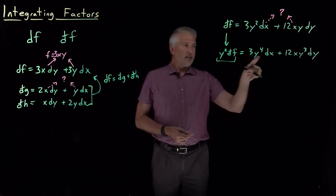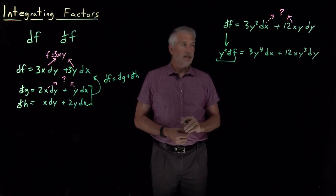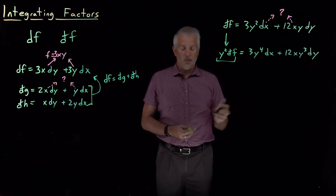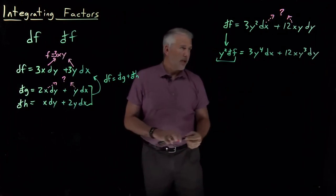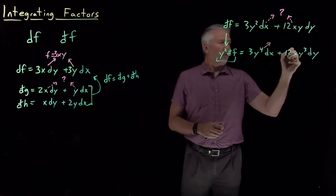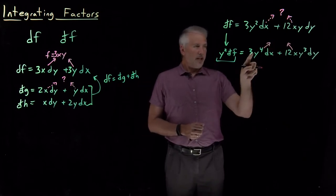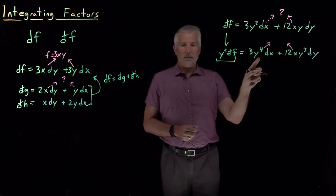That quantity itself, this whole thing y squared times df, we can ask is that an exact or an inexact differential? It has the form of the differential, some quantity multiplied by dx, another quantity multiplied by dy. And in fact, this one's okay. If we ask what function this might have arisen from as a differential.